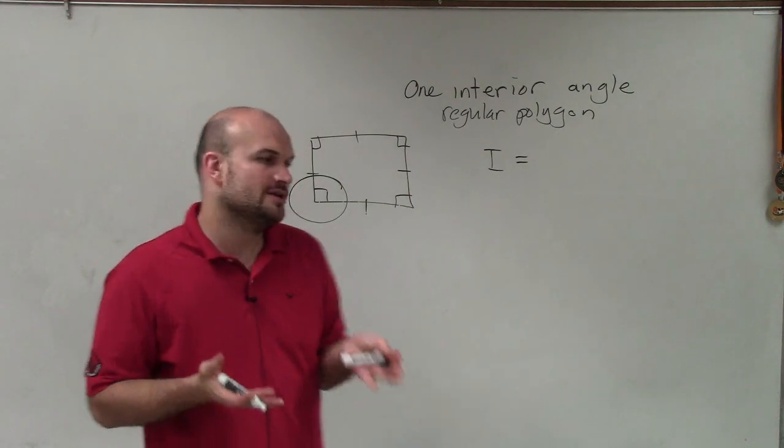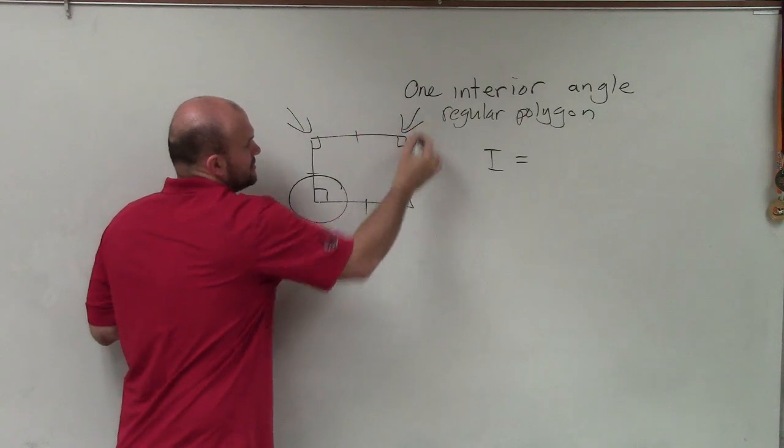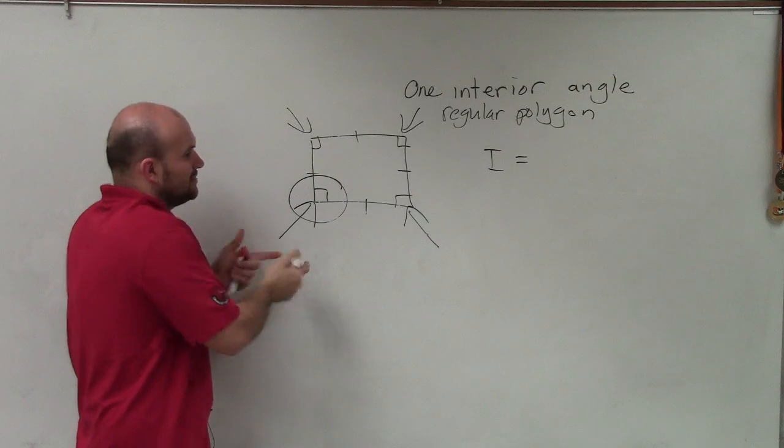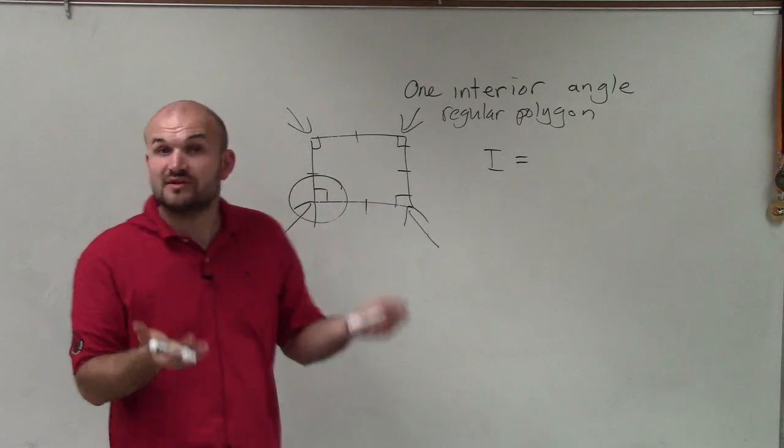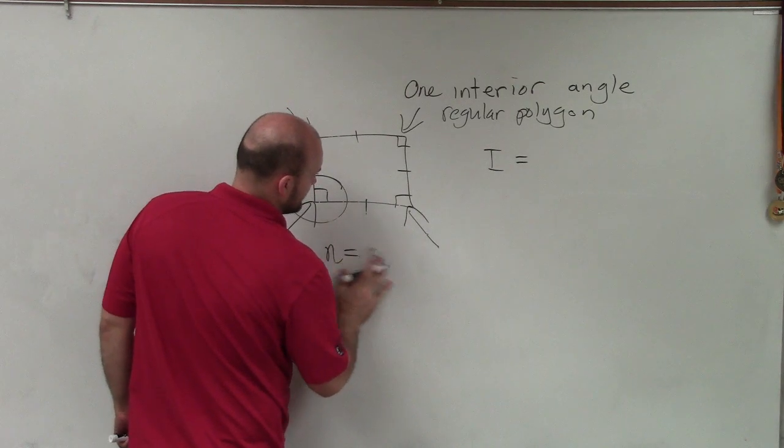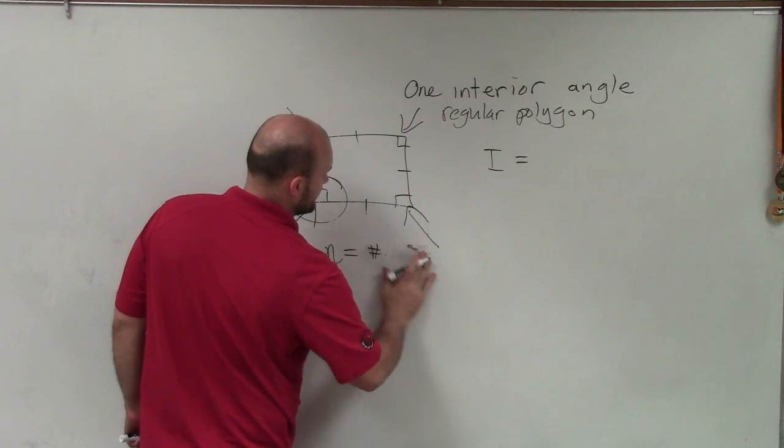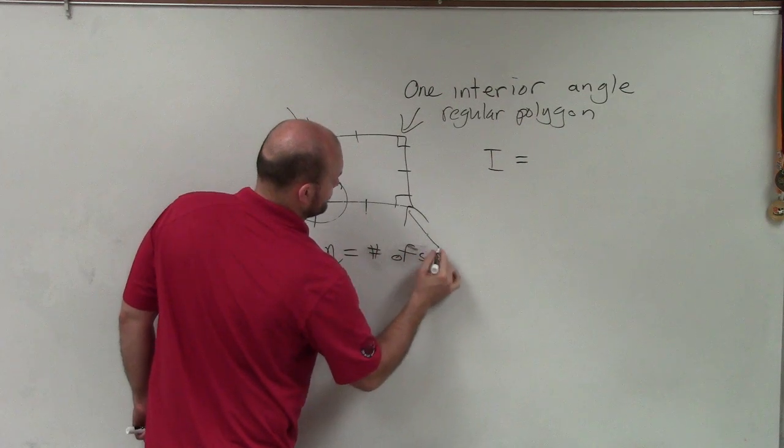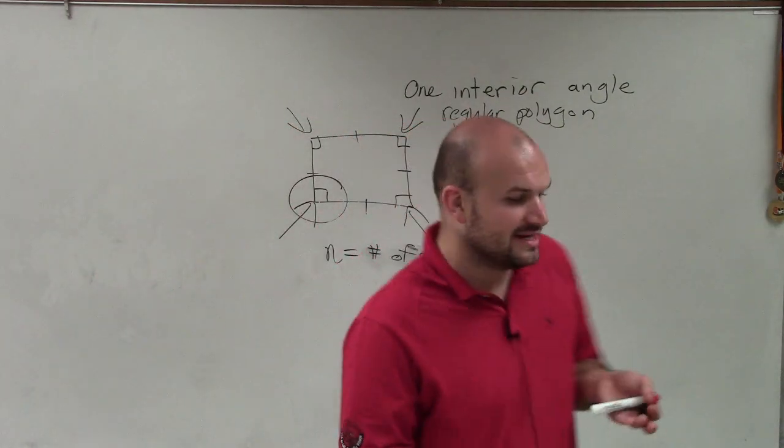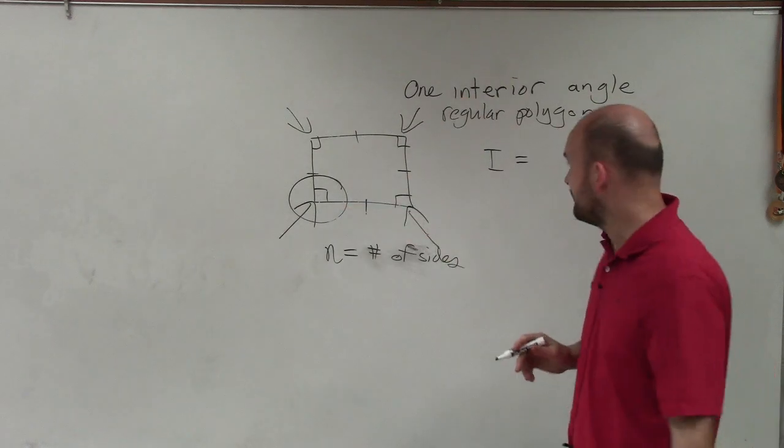Well, to do that, we notice that there are four of them. Right? One, two, three, four. And the number of angles is exactly the same as the number of sides. Right? And we're going to give a variable for that. n equals the number of sides. All right. So n is going to tell us what is the number of sides. And the number of sides is the exact same as the number of angles.